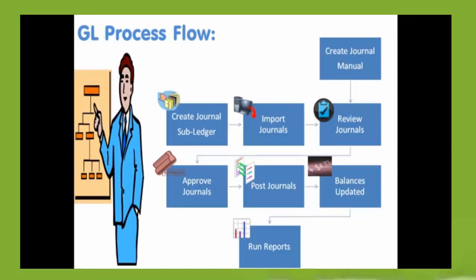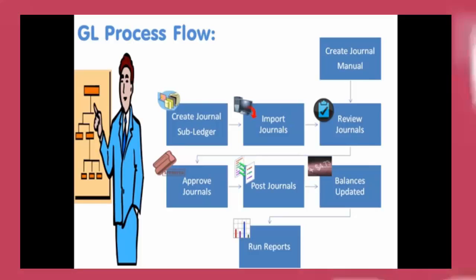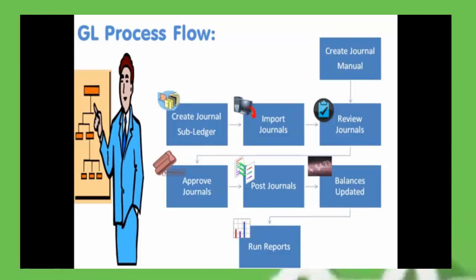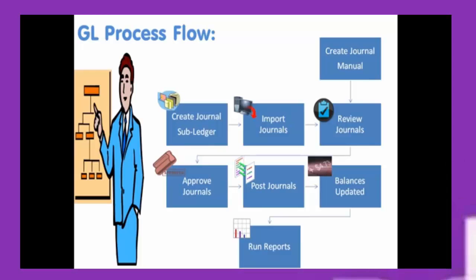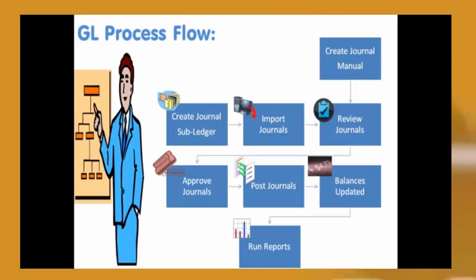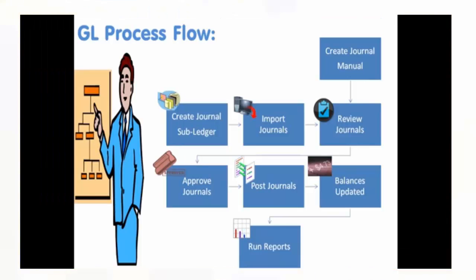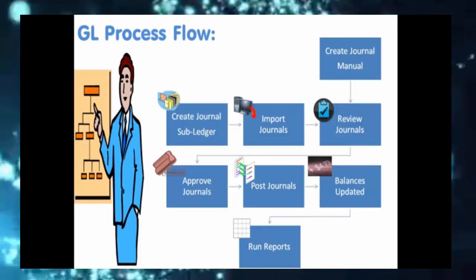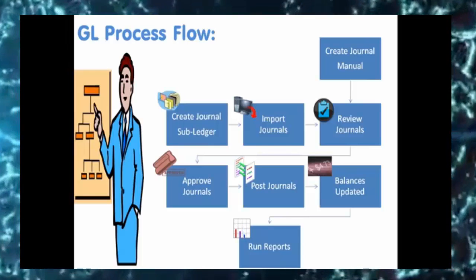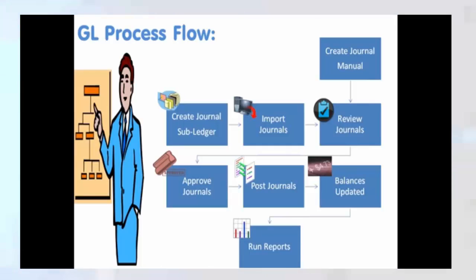GL Process Flow. Create journal or import journal from sub-ledger — accounting journals can be created directly in the general ledger or created in subsidiary ledgers and then imported. Review journals — once the journal is available in the general ledger system you can query that journal and make edits or corrections if required. Approve journals — accounting prudence requires that all financial transactions should be reviewed by someone other than the person creating the transaction; approval ensures validity and correctness. Post journals — journals posting is a process of updating the database with the amounts; once journals are posted you can query for updated account balances.